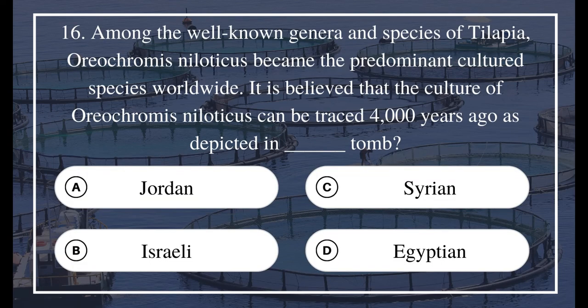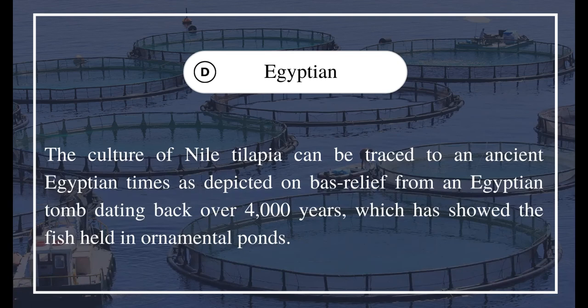Question 16: Among the well-known genera and species of tilapia, Oreochromis niloticus became the predominant cultured species worldwide. It is believed that the culture of Oreochromis niloticus can be traced four thousand years ago as depicted in a blank tomb. A) Jordan, B) Israeli, C) Syrian, D) Egyptian. The answer is D) Egyptian.